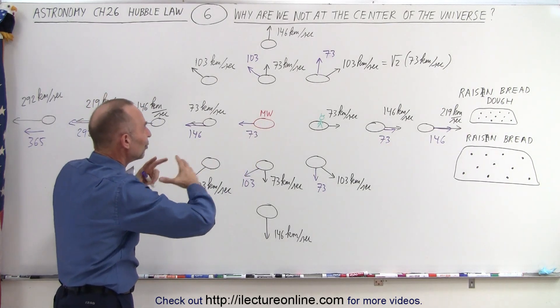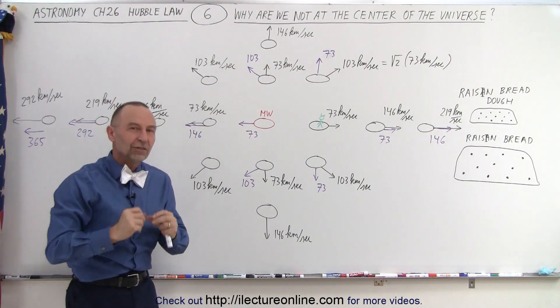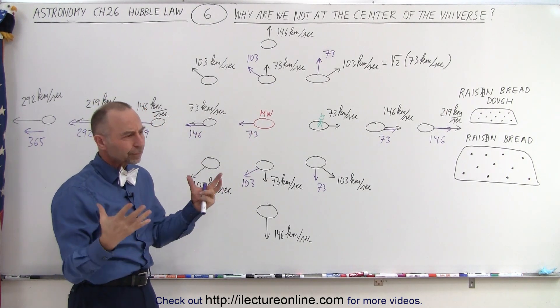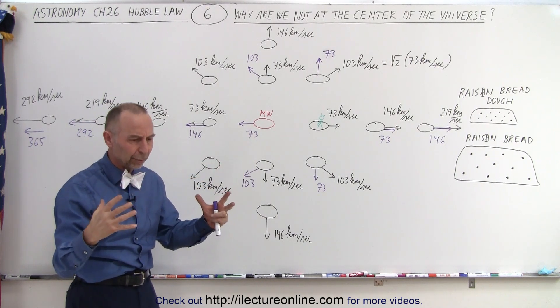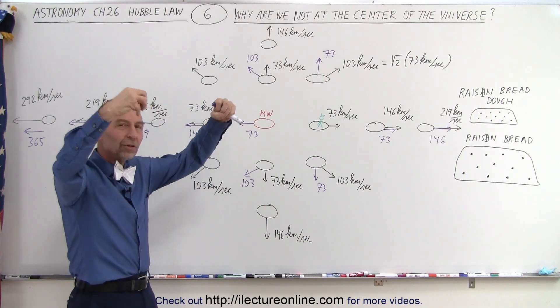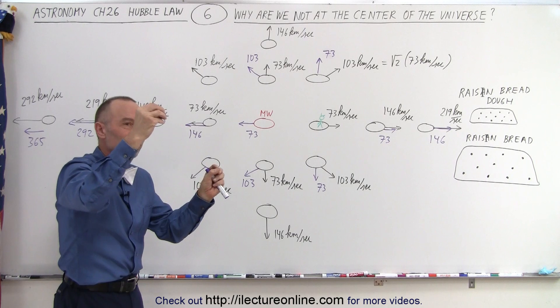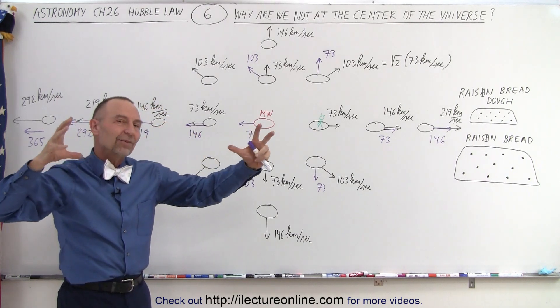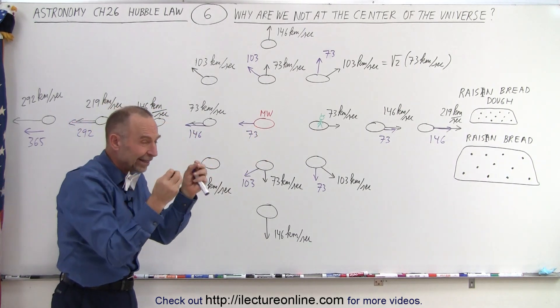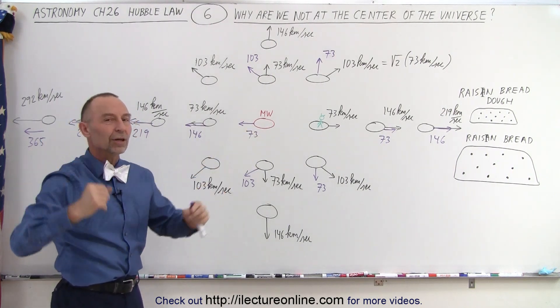It's almost like if you had a three-dimensional spiderweb and all the flies stuck on the spiderweb and then you grab it from all directions and you pull on the spiderweb making the spiderweb bigger, all the flies would move away from each other. And so that's exactly what's happening to the galaxies. They're kind of stuck in space, space expanding, galaxies are moving along with the ride, along as the ride.